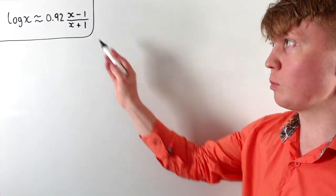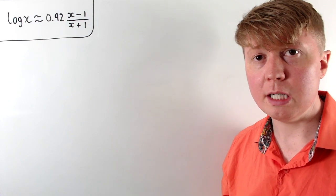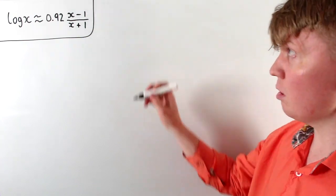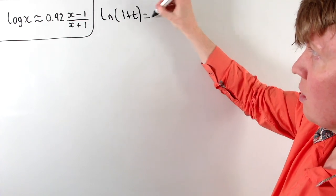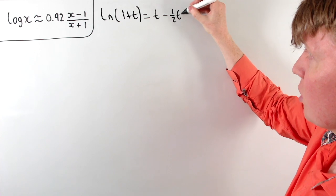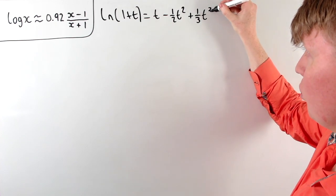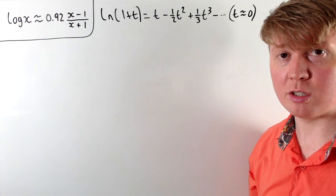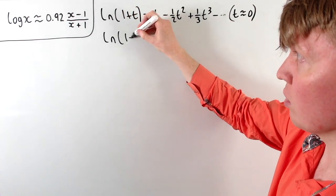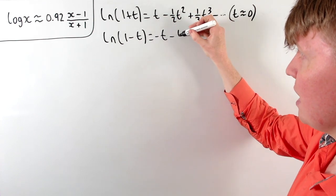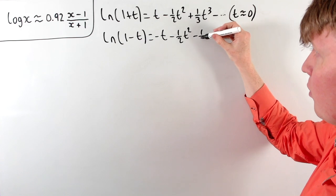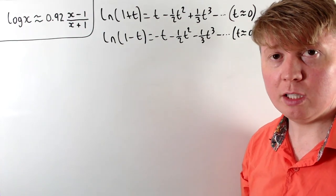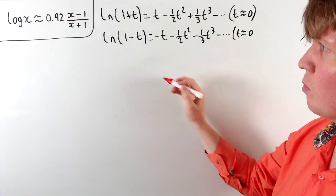Now we'll look at where this approximation function came from. It turns out it's related to a less well-known series expansion for the natural logarithm. The series expansion for ln(1 + t) is t minus one-half t squared plus one-third t cubed and so on — good for t roughly equal to 0. We can substitute negative t to get ln(1 minus t) equals negative t minus one-half t squared minus one-third t cubed and so on, again good for t near 0.